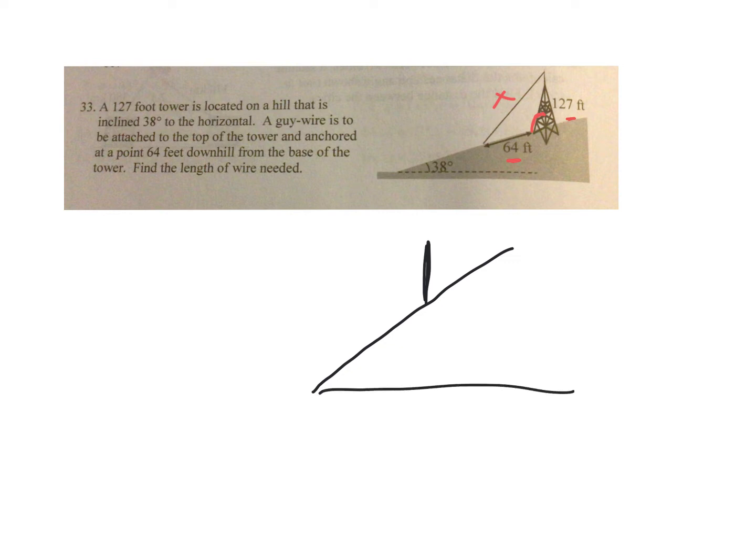This angle here that the hill makes with the horizontal is 38 degrees. If you think back to high school geometry when you studied parallel lines, those are corresponding angles, which means those are equal.